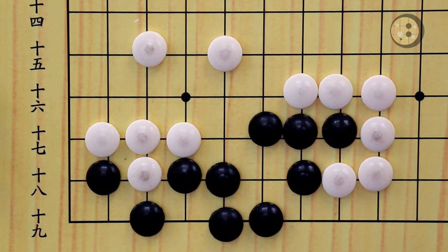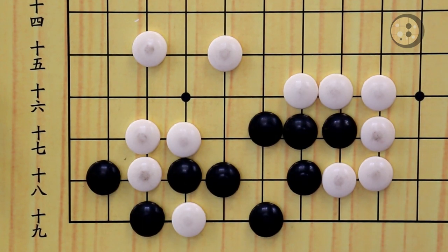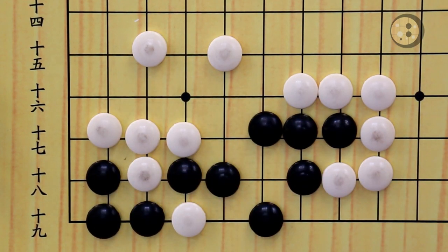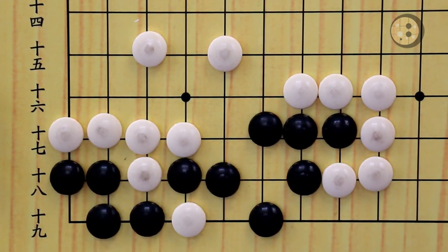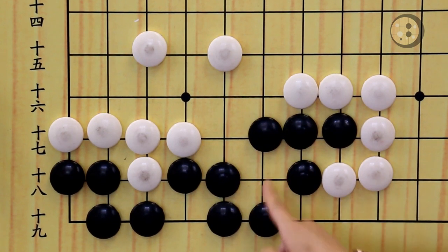When white throws in here, you've got to be very careful. Instead of a capture, now you should connect. After you connect here, even though white can block, you're still able to make the eye in the corner. So you have one eye on the second line here and one eye in the corner. That's alive.